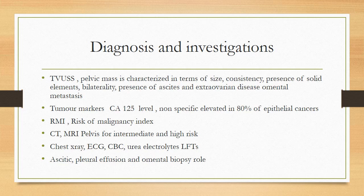Tumour markers: serum CA125 — a glycoprotein — is nonspecific but is elevated in 80% of epithelial ovarian cancers. After getting ultrasound and tumour markers, we calculate the Risk of Malignancy Index (RMI), which is used to triage the ovarian tumour into low, intermediate, or high risk. If the patient falls in intermediate or high risk category, CT scan and MRI of the pelvis are performed. CT scan tells us about extra-pelvic disease and staging; MRI helps define tissue planes and operability.